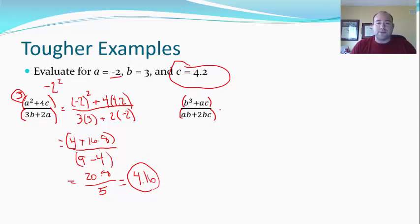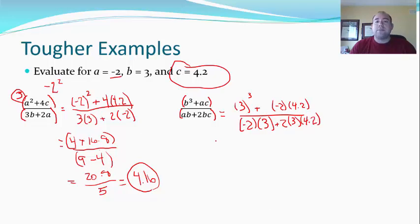All right, let's do it again. So b cubed is 3 cubed plus negative 2 times 4.2 over negative 2 times 3 plus 2 times 3 times 4.2. Just plugging in. Be very careful about that. Make sure you put the right letters in the right spot, so the right numbers in the right spots. So 3 cubed is 27. Negative 2 times 4.2 is negative 8.4. That's going to be negative 6 down the bottom, and then 2 times 3 times 4.2 is 25.2.